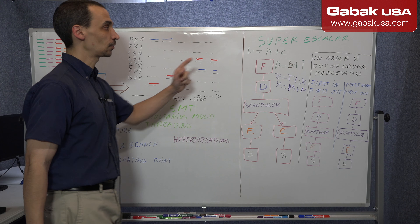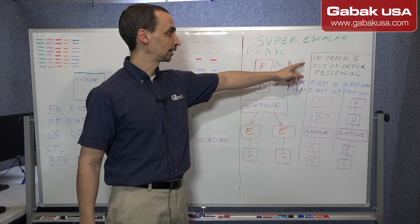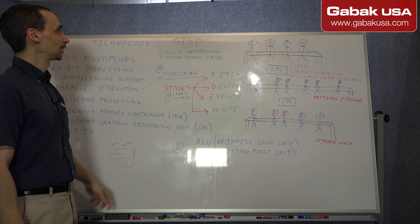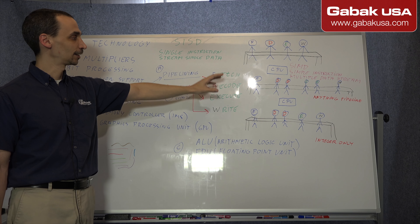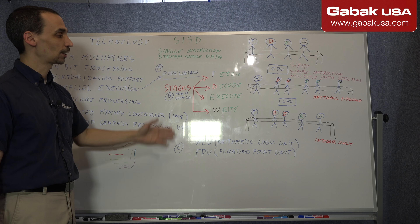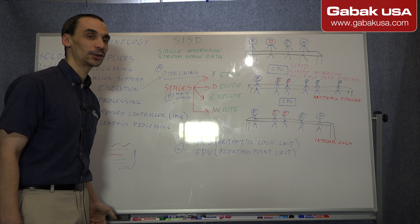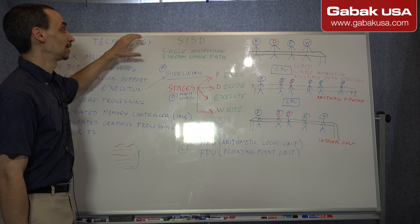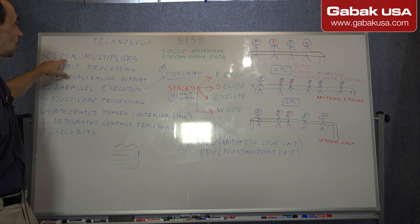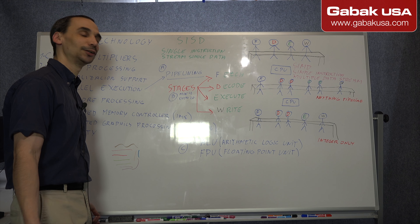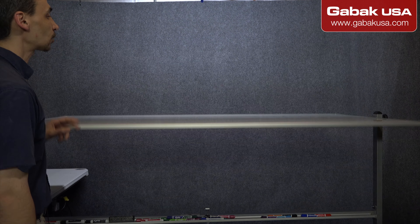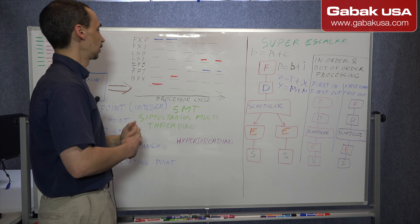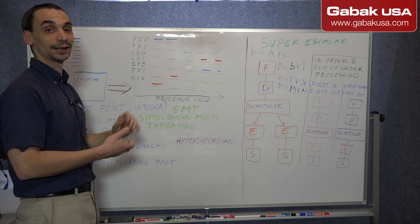If you didn't see my other classes about superscalar, in-order and out-of-order processing, and also about single instruction stream, single data and the different stages, I recommend you go and watch those videos so you'll understand everything a little bit better. We start in the CPU course covering how everything works — clocks, multipliers, 64-bit processors and other things. We're going to explain this a little bit and then jump to the computer so you can see how to identify everything.